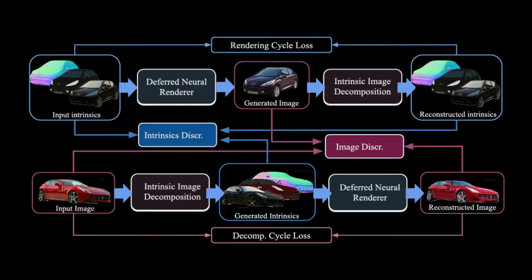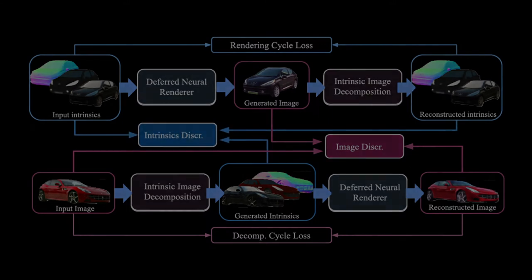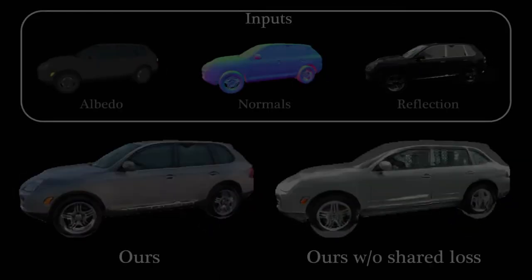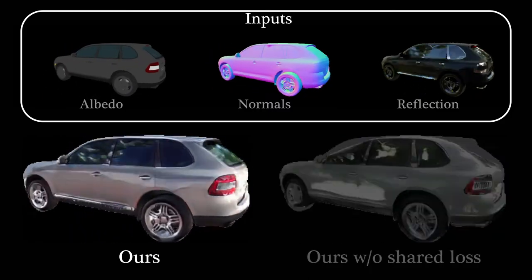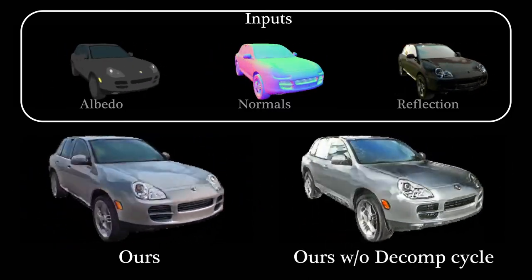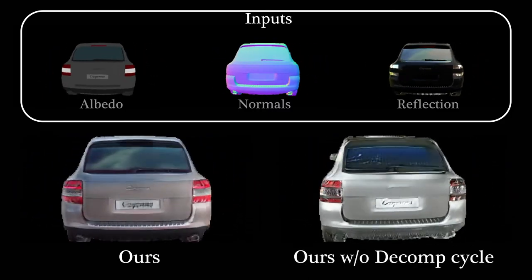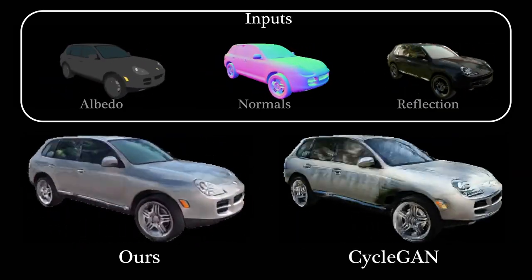We do the same for the intrinsic discriminator as well. We now show rendering results of our method compared to baselines. Training without the shared discriminator loss results in inconsistent structures. Similar quality results are achieved when training the neural rendering cycle but not the decomposition cycle.